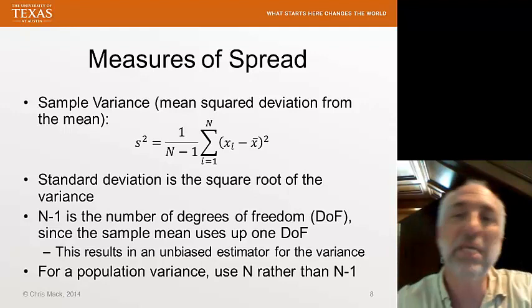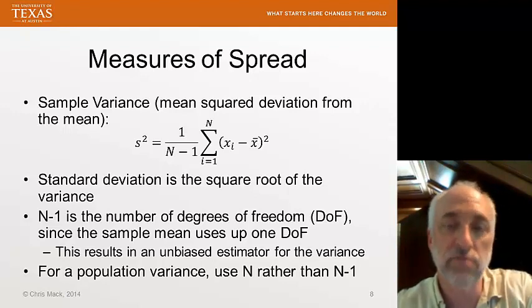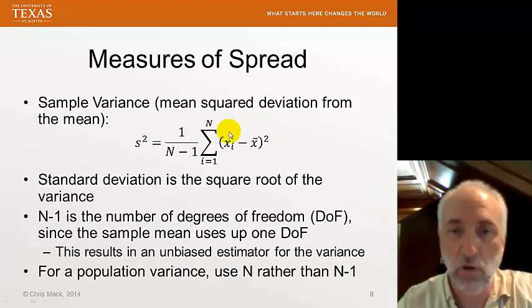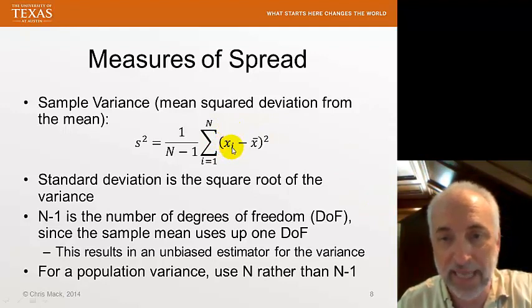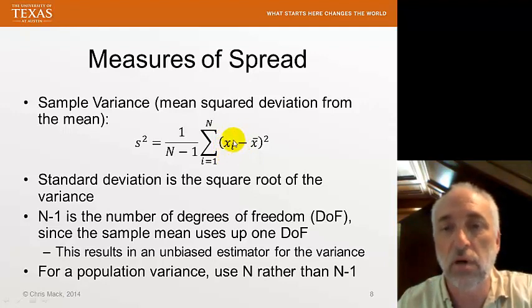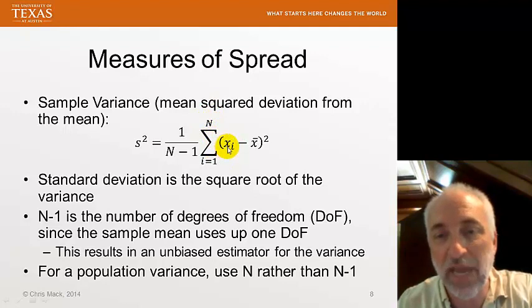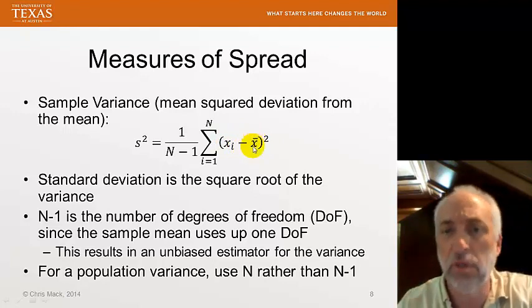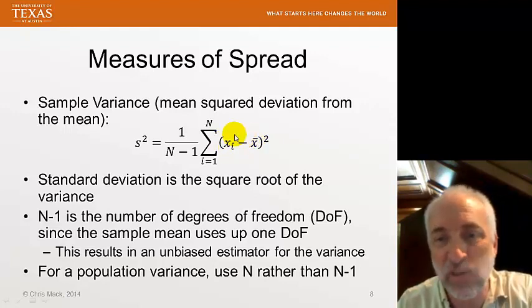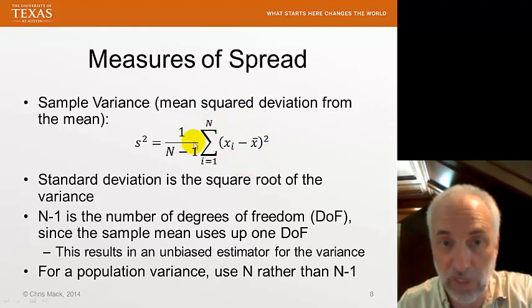The variance is the mean squared deviation from the mean. So I take the data, every data point is X sub i. So X sub 1, X sub 2, X sub 3, etc., are symbols for each data point up to n data points. So from every value X sub i, I subtract the mean. Obviously, I have to calculate the mean first. Then I take this deviation and I square it. Then I find the average value of the squared deviations. That's the variance.